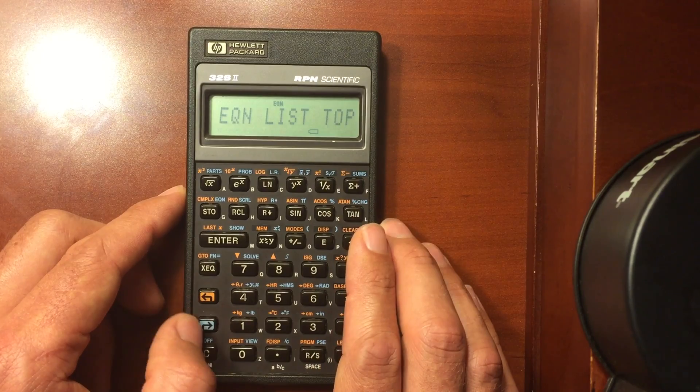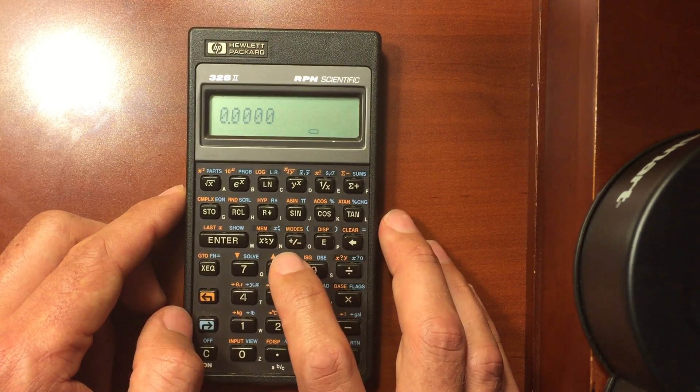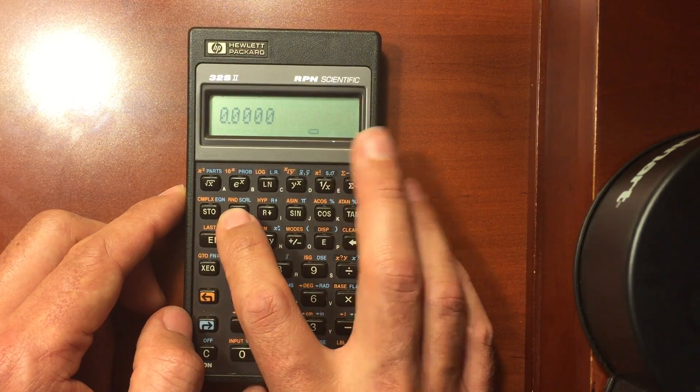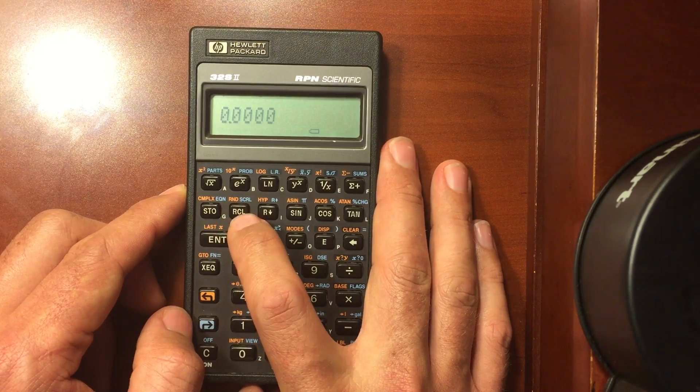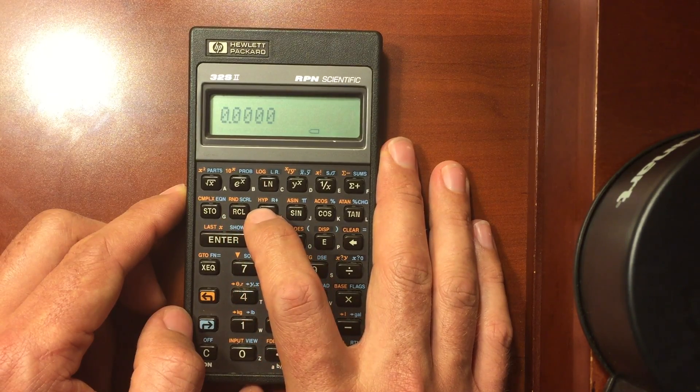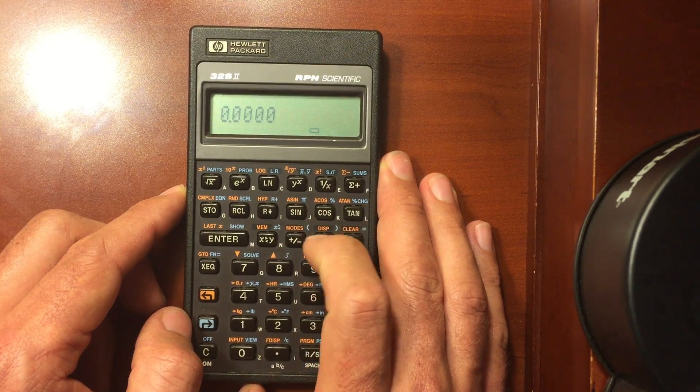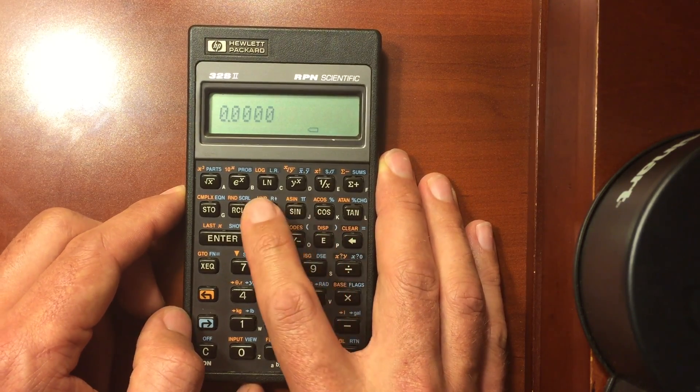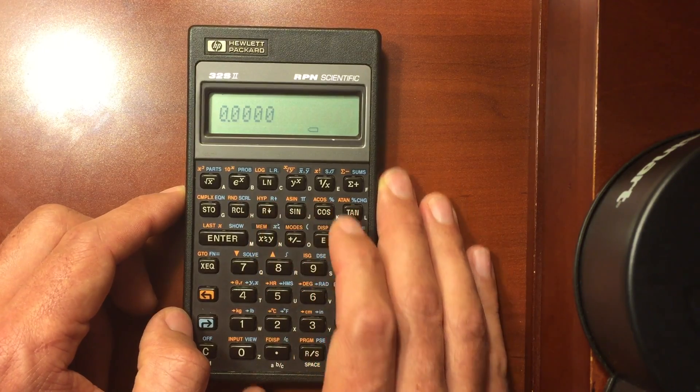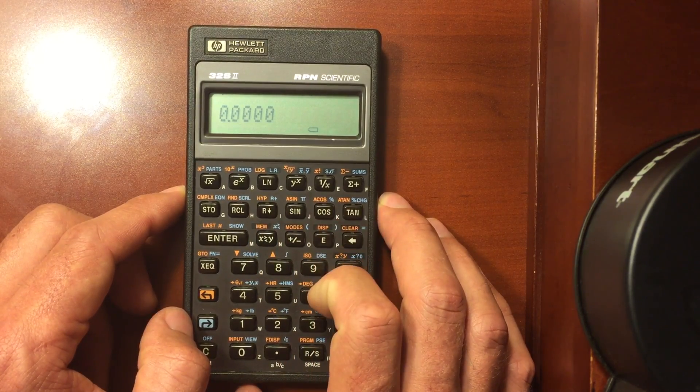You can round numbers. You can do hyperbolic functions: hyperbolic sine, cosine, tangent, arc sine, arc cosine, arc tangent. You have of course pi, you can roll the stack up and down, percent, percent change.